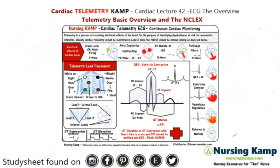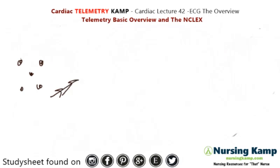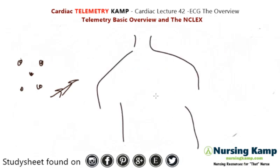Telemetry is leads that are put on a person to monitor for potential problems. There are five leads generally. When we're looking at the placement of these leads, we start by putting them on the chest. The way we place them is white on the right — so white on right, on the patient's right side.